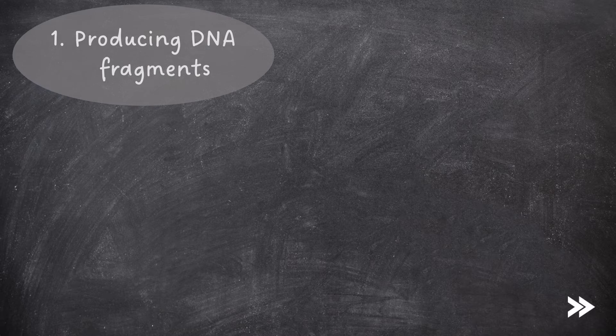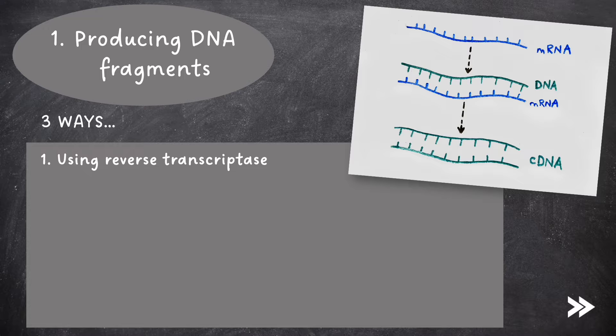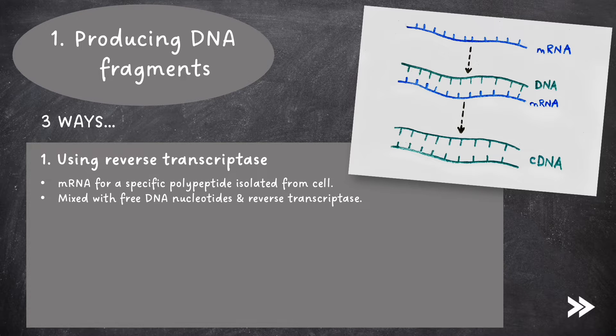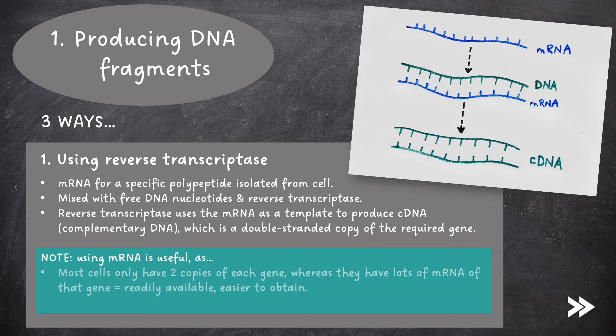There are three ways of producing DNA fragments, one of which is to use a reverse transcriptase enzyme. mRNA for a specific polypeptide is isolated from a cell. It is then mixed with free DNA nucleotides and reverse transcriptase. The reverse transcriptase then uses the mRNA as a template to produce cDNA, complementary DNA, which is a double-stranded copy of the required gene. Note that using mRNA is useful, as most cells only have two copies of each gene, whereas they have lots of mRNA of that gene. The mRNA is therefore readily available and easier to obtain. Also, mature mRNA has no introns.